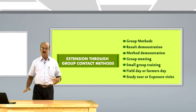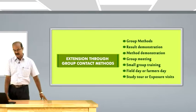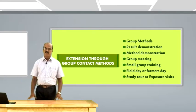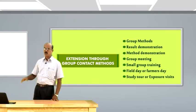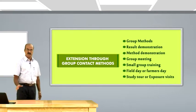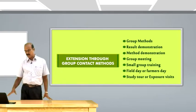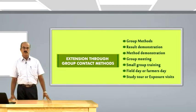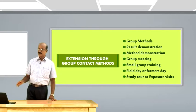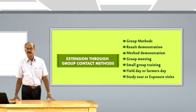Result demonstration shows the result, efficiency, or effectiveness of a method, technology, or variety in the field situation. Method demonstration involves a short-time demonstration mainly for imparting a skill — showing how to perform a practice or activity. Group meeting is another group technique depending on the number of individuals available. Small group training involves up to 15 members participating in skill-based training.